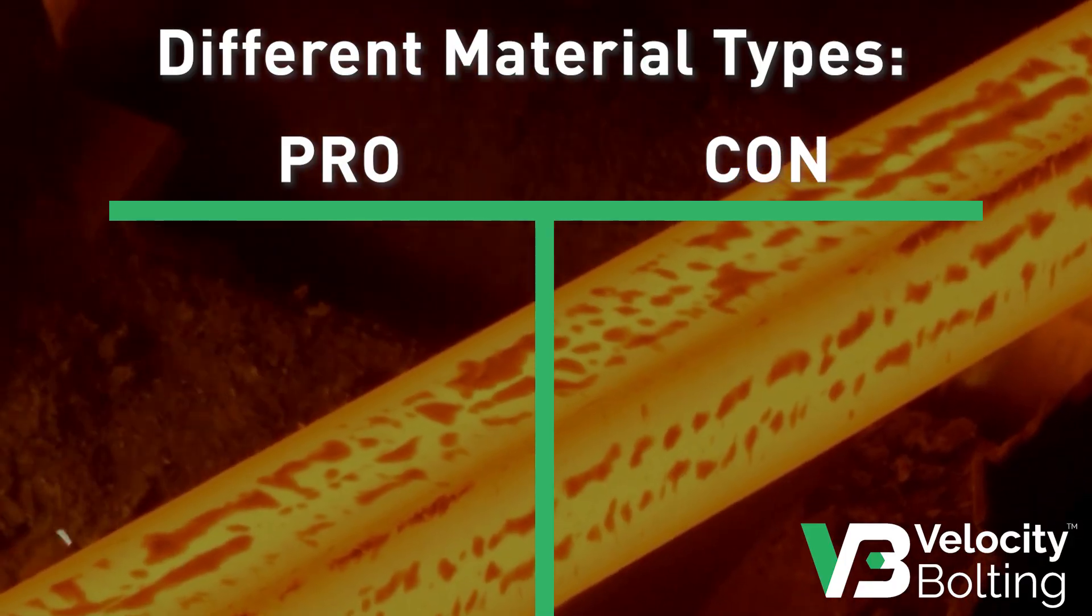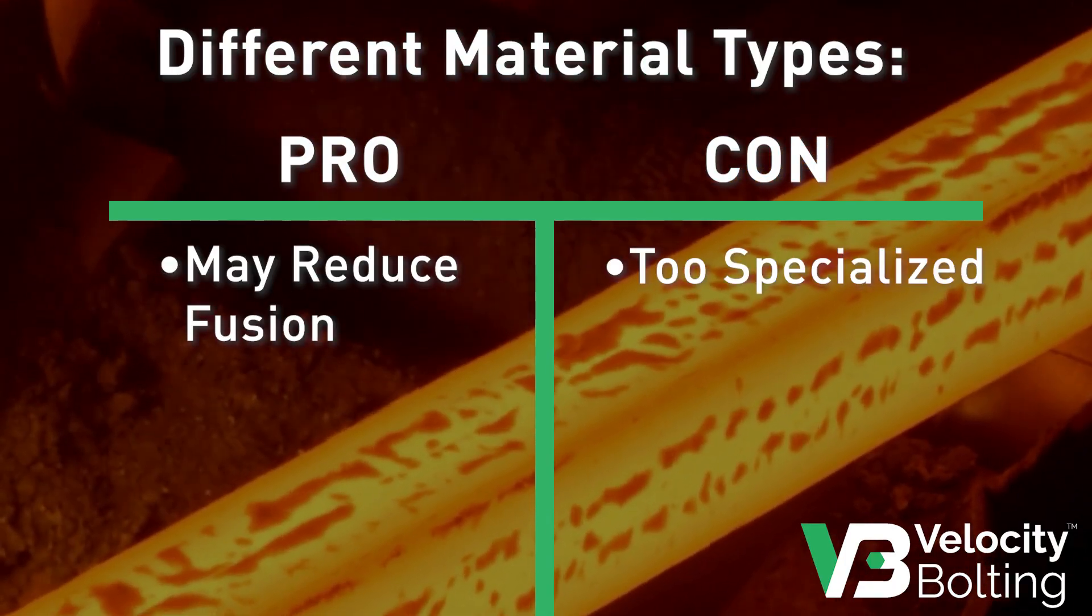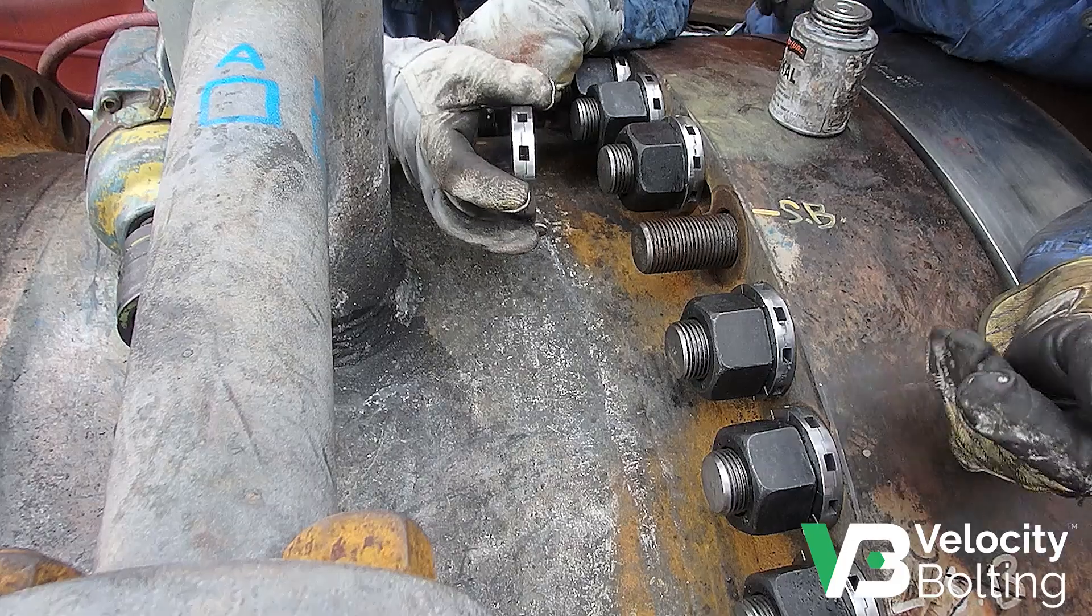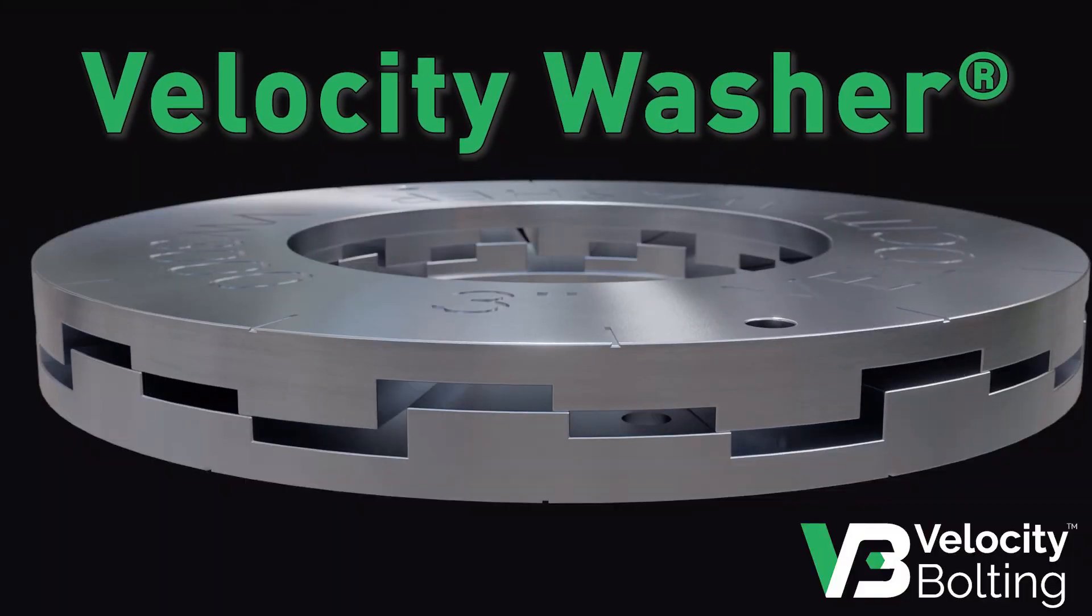Using different material types for nuts and bolts can reduce their ability to fuse together, but it's not an option for every setup and won't always prevent galling in any case. The easiest and most reliable option is to use velocity washers.